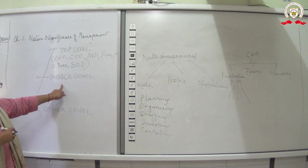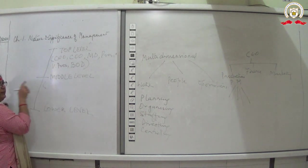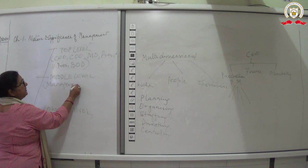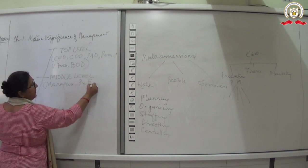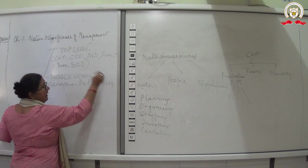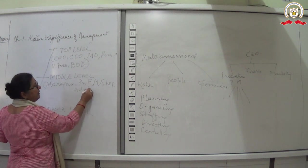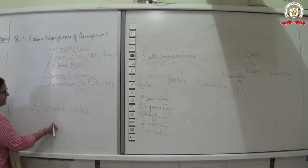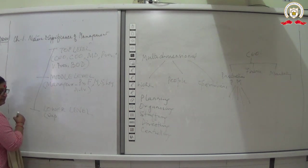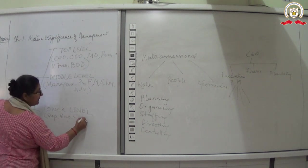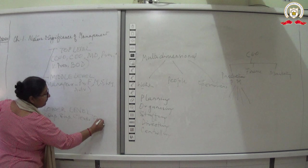The middle level includes all managers — production manager, finance manager, marketing manager, sales manager, legal manager, advertising manager, and similar roles. The lower level includes designations like supervisor, superintendent, clerks, and in production, foremen.